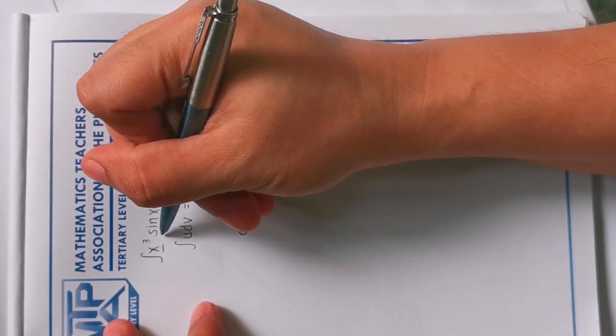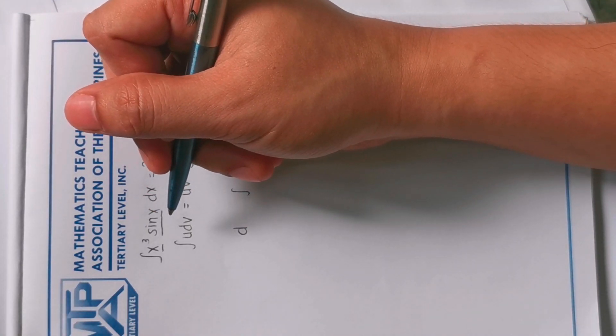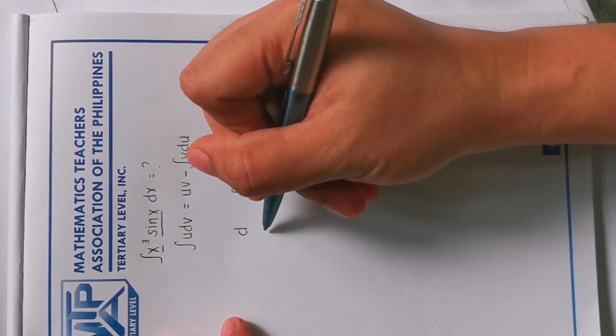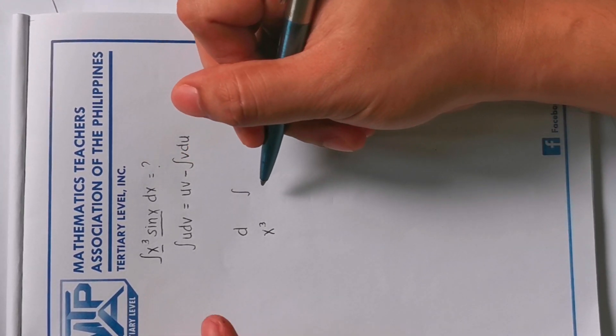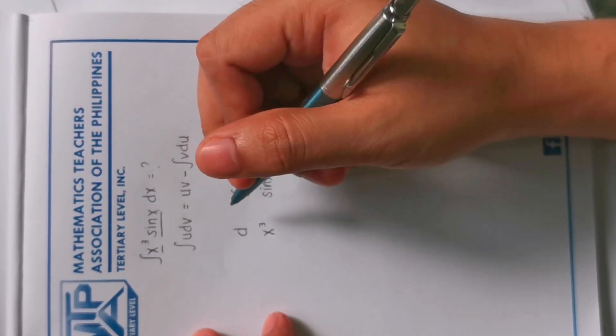So what we're gonna put under the differential column is the function that will power down after the series of differentials. So from the example x cubed and sine x, which of the two will power down after differentiating? x cubed, right.